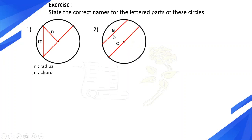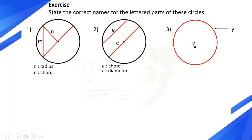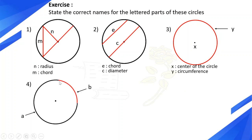E is also a chord, and C is a diameter — it passes through the center. X is the center of the circle. Y is the circumference. Now we have two arcs: A is the major arc and B is the minor arc.